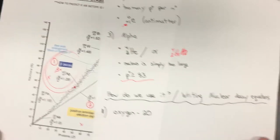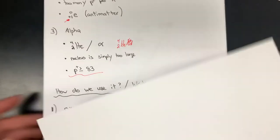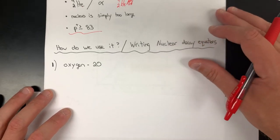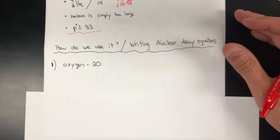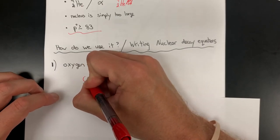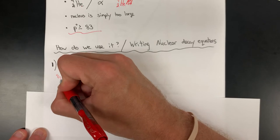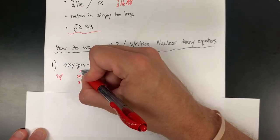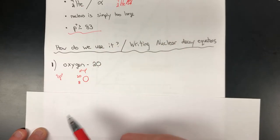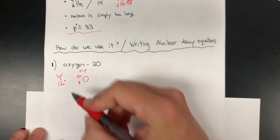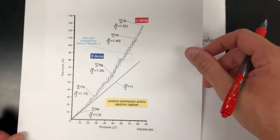So how do we actually use the band of stability? Recall that our axes are protons and neutrons. If we're given some isotope and asked to evaluate whether it's a radioisotope, we first need protons and neutrons. For example, take oxygen-20. We're given the mass number of 20. Looking at the periodic table, the atomic number of oxygen is 8. So we have 8 protons. Since 20 is the sum of neutrons and protons, if we have 8 protons, we necessarily have 12 neutrons. I would then use the band of stability and plot that as a data point.